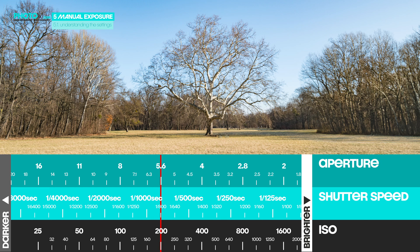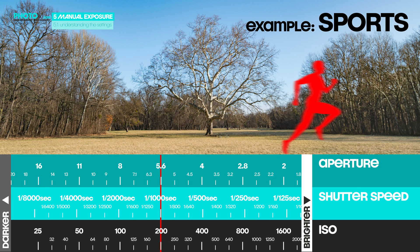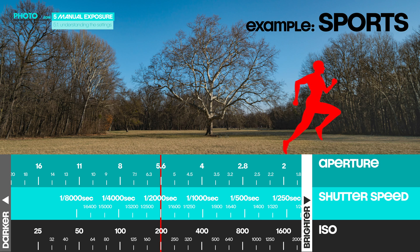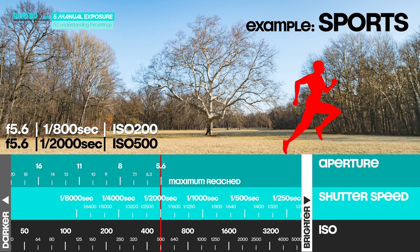What if we need an even faster shutter speed for sports, where athletes are moving faster than kids? We start at 1/800th and want 1/2000th, so we count clicks: 4 clicks. It doesn't always have to be full stops – this time we have 4 clicks, which is one stop and another third stop. Now we need to compensate for that loss of brightness. Let's say the aperture is already at its maximum on our kit lens. Our only chance is to raise ISO. Starting at ISO 200, we need 4 clicks, and we end up at ISO 500. We went from f5.6, 1/800th, ISO 200, to f5.6, 1/2000th, ISO 500.